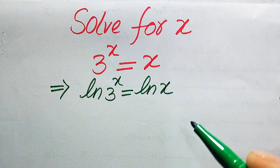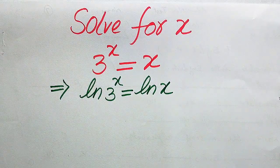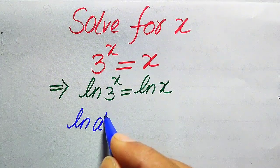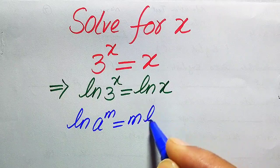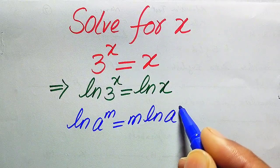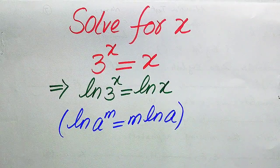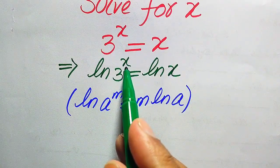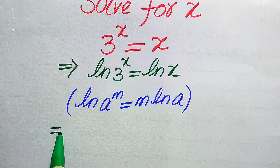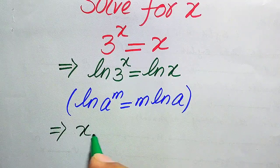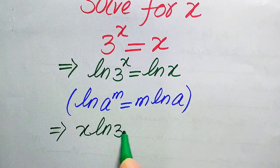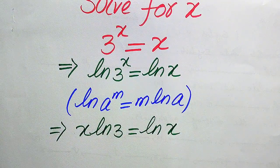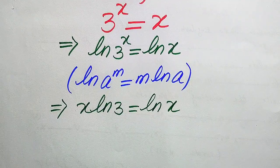We use the nice property of log: log(a^m) = m·log(a). According to this property, we move the variable X from the exponent to the front of the log, and it will be written as X·log(3) = log(X).